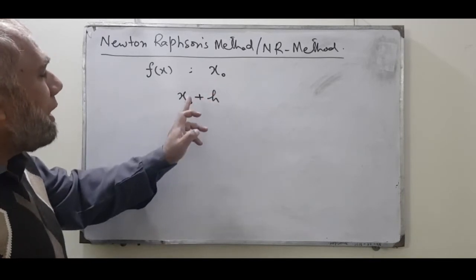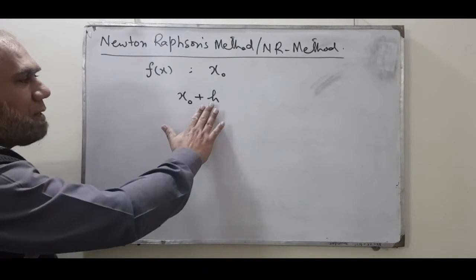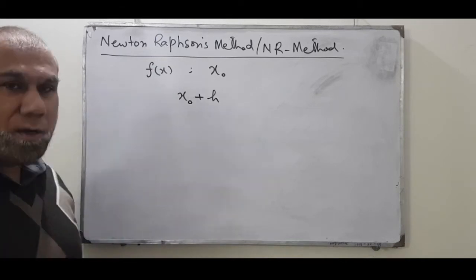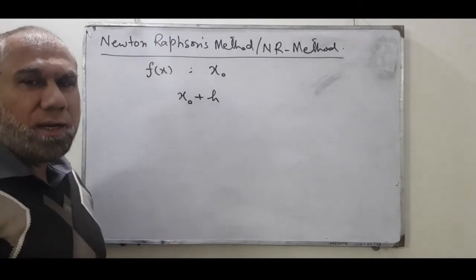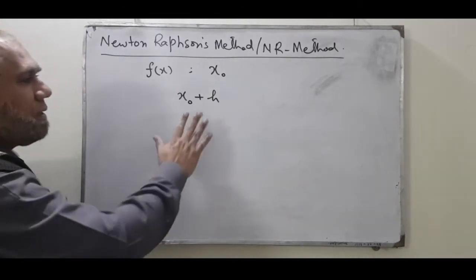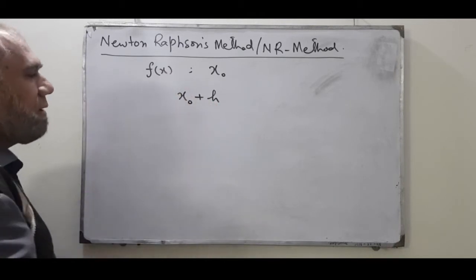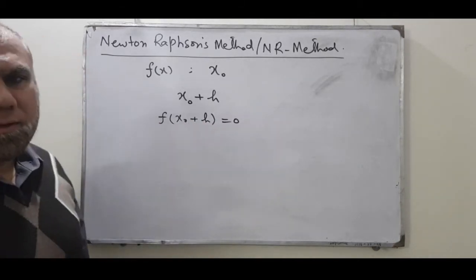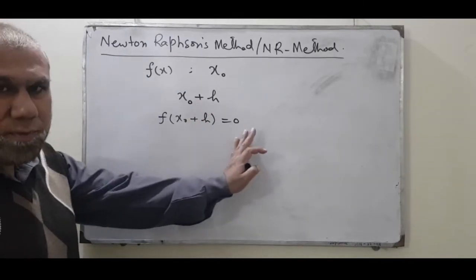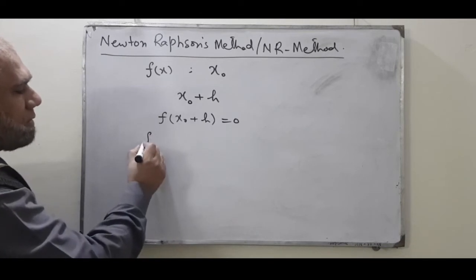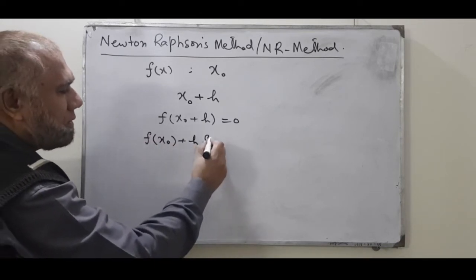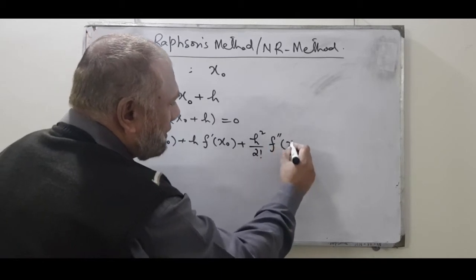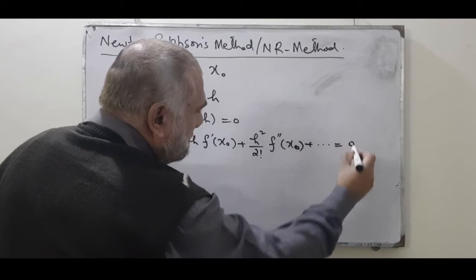Here x₀ is the initial guess given in the question, and h is the increment we are providing. h can be any number added to x₀ in order to obtain the next better approximation. To find h, if we assume that x₀ + h is going to be the root of the function f(x), then according to the principle, f(x₀ + h) should equal 0. Now if we expand this using the Taylor series, we get terms including h·f′(x₀) and (h²/2!)·f″(x₀) and more terms, all equal to 0.